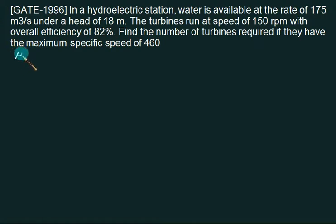So Q equals 175 m³/s, head is 18 meters, speed is given as 150 rpm, overall efficiency is 82 percent. You have to find out the number of turbines and the specific speed is given as 460.